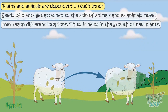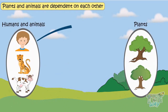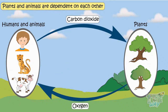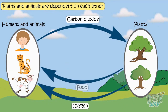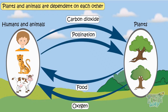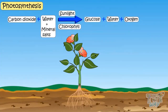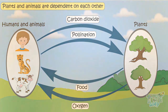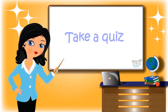So, animals provide carbon dioxide to plants. Plants provide oxygen to animals. Plants provide food to animals. And animals help to grow more plants. So kids, today we learned how plants prepare their own food and how animals and plants are interdependent on each other. Now go ahead and take a quiz to learn more. Bye-bye!